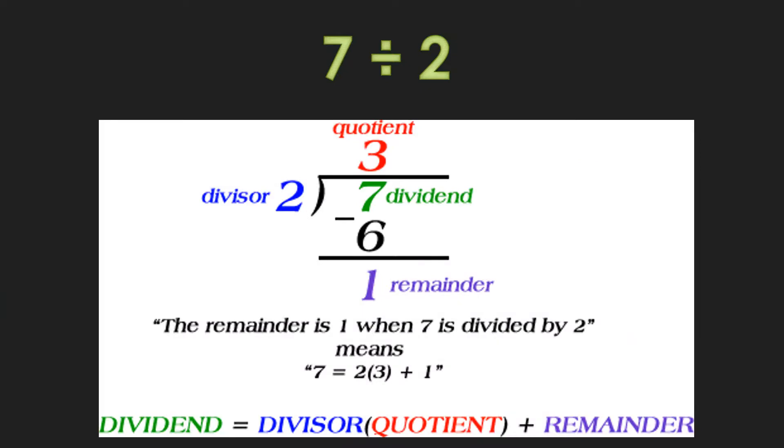Let's do a simple review. We have seven divided by two. It does not go in evenly. You have seven as your dividend and two as your divisor.